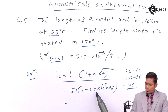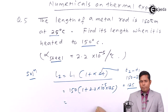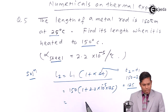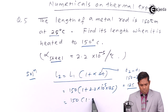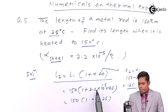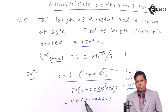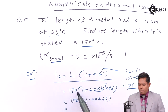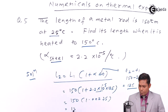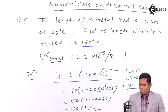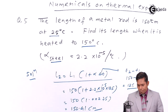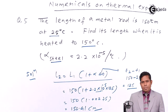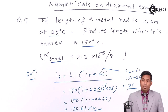This gives us 125 × 2.2 × 10⁻⁵, which works out to 0.00275. So 1 + 0.00275 = 1.00275. You multiply this by 150 and you get the answer in centimeters. The answer comes out to be 150 + 0.41 centimeters, so the change in length is only 0.41 cm. When the steel rod is heated through a temperature difference of 125°C, the length increases by just 0.41 centimeters — a very small number.